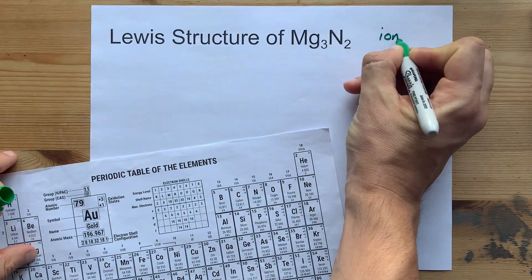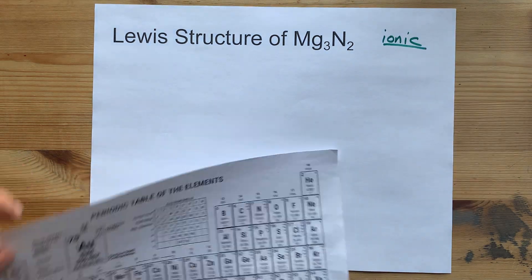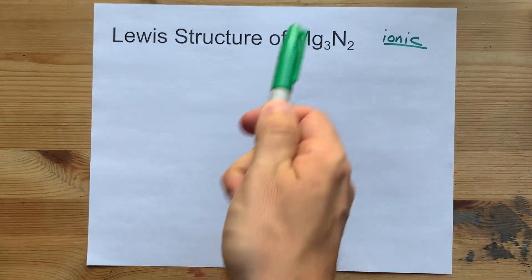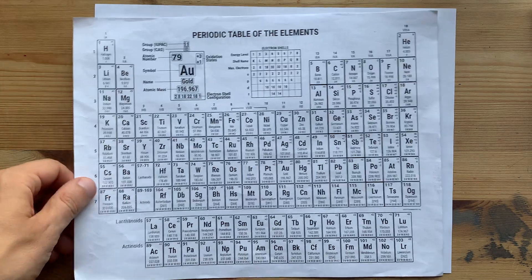Metals and non-metals combine to make ionic compounds, where the metals give away electrons to the non-metals.